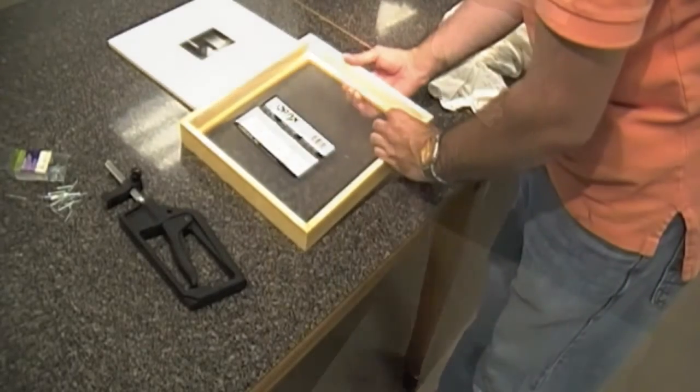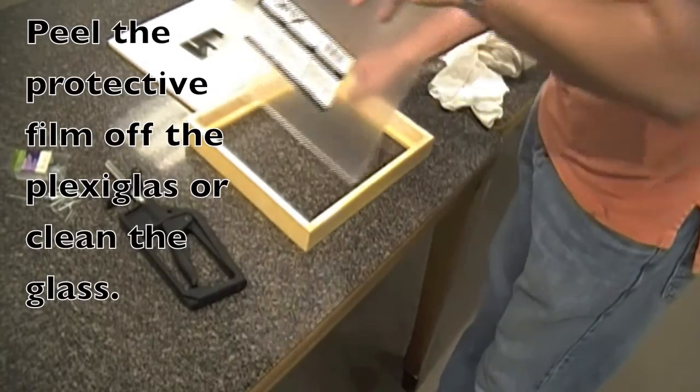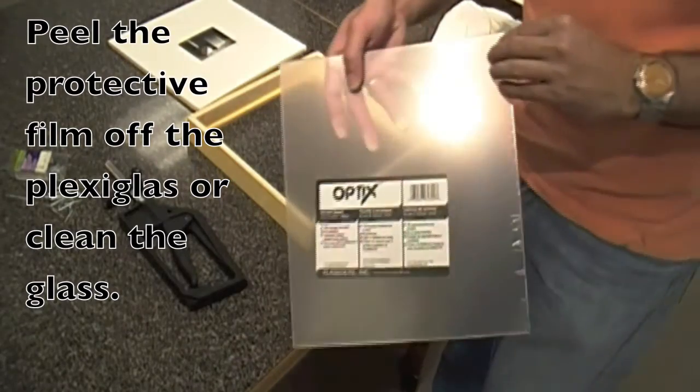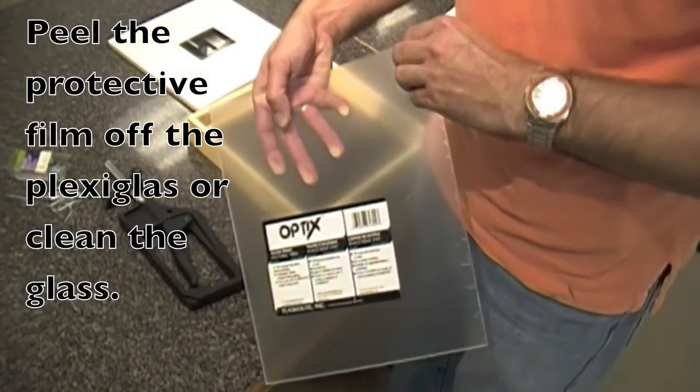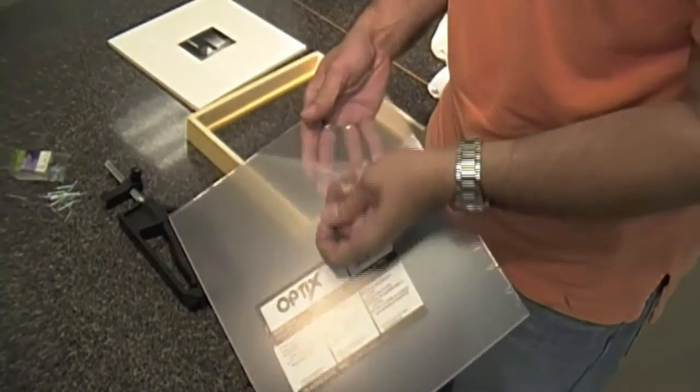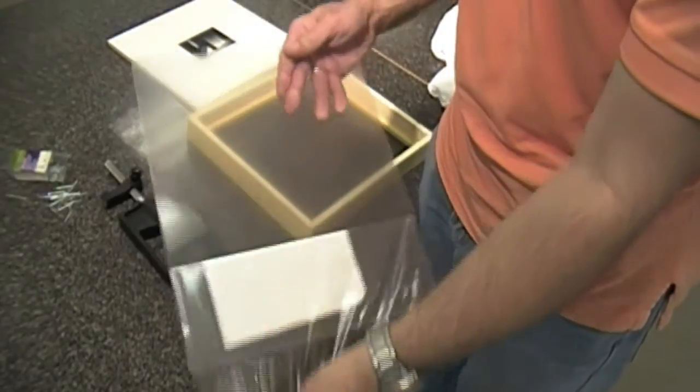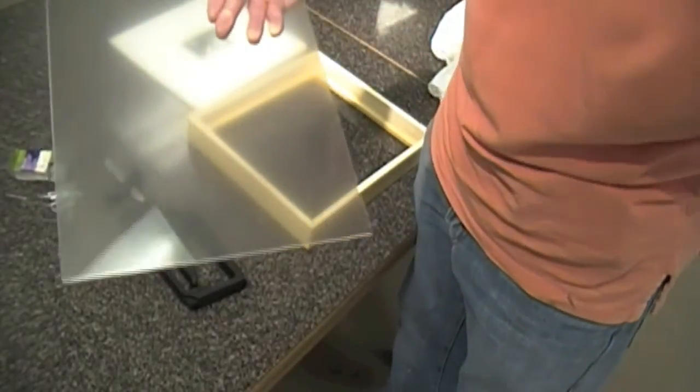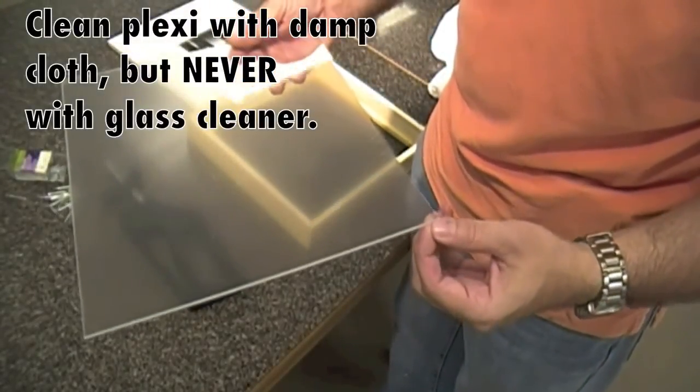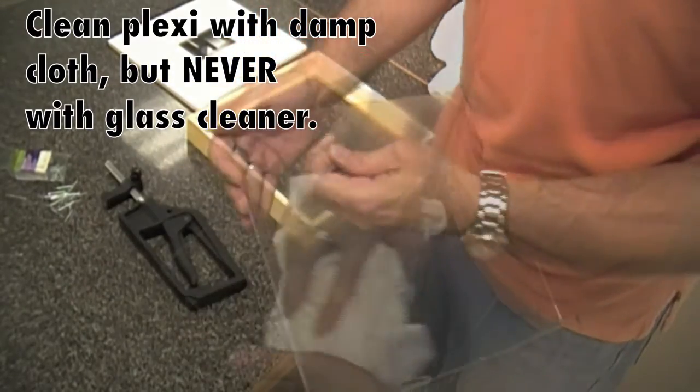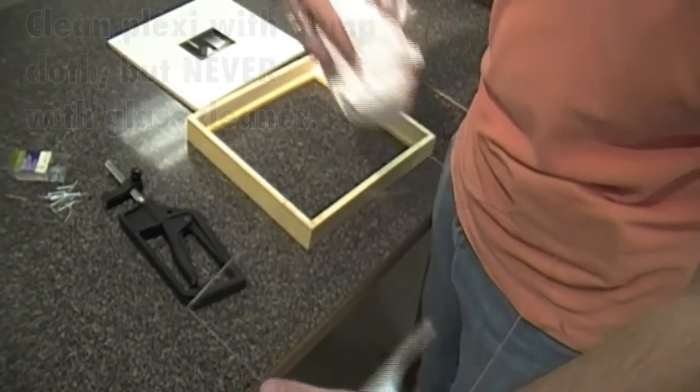Make sure that it's clean and there's no particles on it before you put your glass or plexiglass. Do not use any kind of glass cleaner on plexiglass. It will dull it and kind of scratch it. But it comes to you pretty clean anyway. It's got film on both sides. You'll peel that off first. But then it's got a lot of static with it.